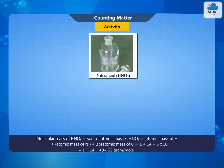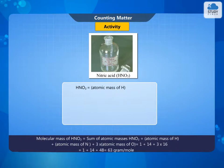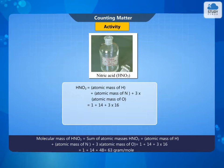Molecular mass of HNO3 is equal to the sum of atomic masses. HNO3 = atomic mass of H + atomic mass of N + 3 × atomic mass of O = 1 + 14 + 3 × 16 = 1 + 14 + 48 = 63 grams per molecule.